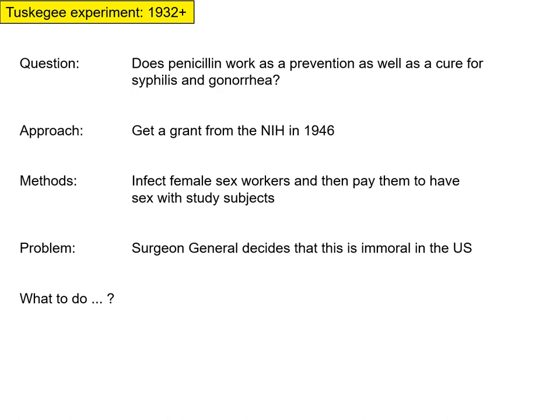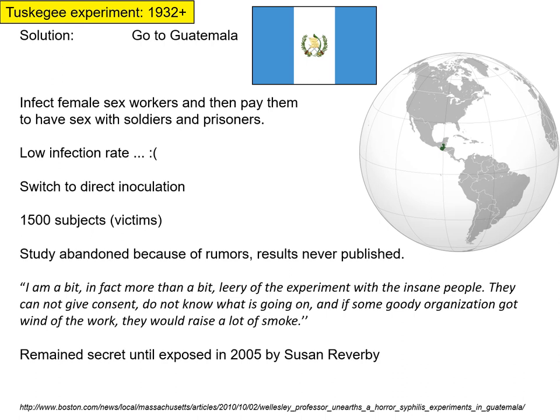Their experiment was going to infect female sex workers and then pay them to have sex with study subjects to see whether penicillin protected the subjects from getting syphilis or gonorrhea. The Surgeon General of the United States decided this was immoral in the United States, so if something is immoral in the US, you go somewhere else. The solution was to go to Guatemala — they infected some sex workers and paid them to have sex with soldiers and prisoners. If you think about it, soldiers generally must follow commands and prisoners don't have a lot of freedom to say no. It also turned out there was a low infection rate, since the per-event chance of getting syphilis or gonorrhea even from an infected person is fairly low.